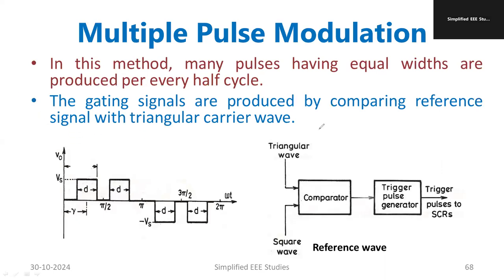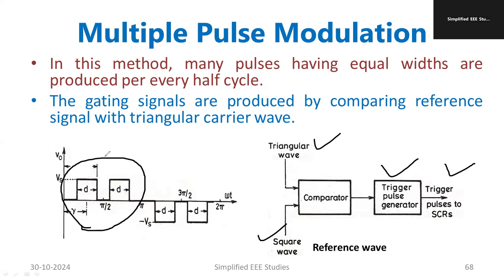Now let us see the waveform for better understanding. We have a triangular waveform and a square waveform. The triangular waveform is known as the carrier signal, and the square waveform is known as the reference signal. We require a comparator. Using the comparator, the triangular waveform is compared with the square waveform, and the triggering pulses are generated. Those triggering pulses are directly given to the gate terminal of the IGBT or MOSFET. Instead of a single pulse, we are going to use multiple pulses.